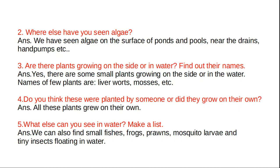What else can you see in water? Make a list. We can also find small fishes, frogs, mosquito larvae, and tiny insects floating in water. Not only algae but also animals can be found. We can find small fishes, frogs, plants, and crabs. Such kinds of animals we have to observe in the water.